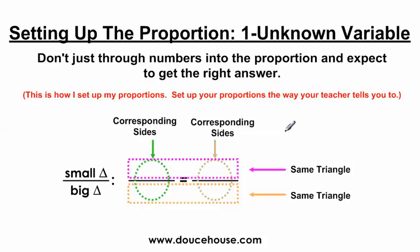I always compare small triangle to big triangle. You can do big triangle over small triangle. Do whatever makes you comfortable here. But this is what I do. Every number that's on the top of the proportion comes from the small triangle. Everything on the bottom of the proportion comes from the big triangle. Whenever I'm setting it up, up and down, I'm always checking, putting in the numbers that correspond to each other. You need to do what your teacher tells you, but this is what I show my students.